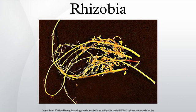Rhizobia are a paraphyletic group that fall into two classes of the Proteobacteria: the alpha and beta Proteobacteria. As shown below, most belong to the order Rhizobiales, but several Rhizobia occur in distinct bacterial orders of the Proteobacteria. These groups include a variety of non-symbiotic bacteria. For instance, the plant pathogen Agrobacterium is a closer relative of Rhizobium than the Bradyrhizobium that nodulates soybean. The genes responsible for this symbiosis with plants, however, may be more closely related than the organisms themselves, acquired by horizontal transfer rather than vertical gene transfer.